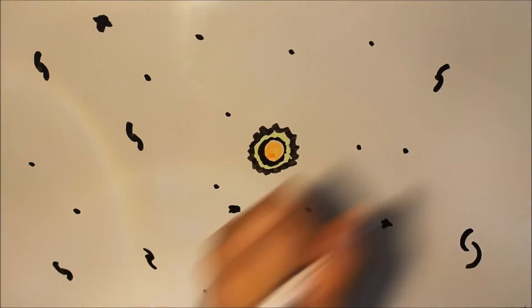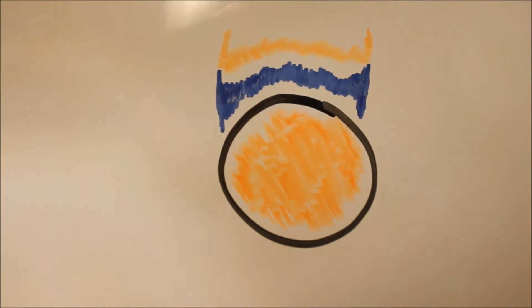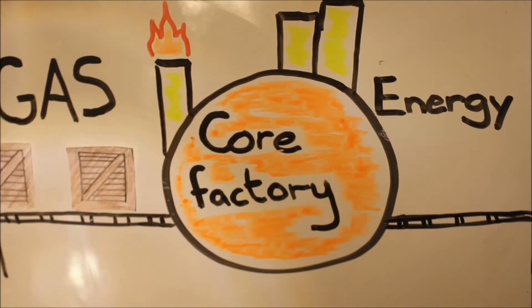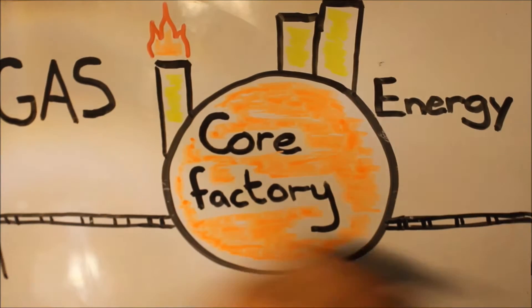To fully understand how the sun works, we have to go deep inside the sun. The sun is a big ball of hot gases. Inside the sun's core, these gases are converted into energy.